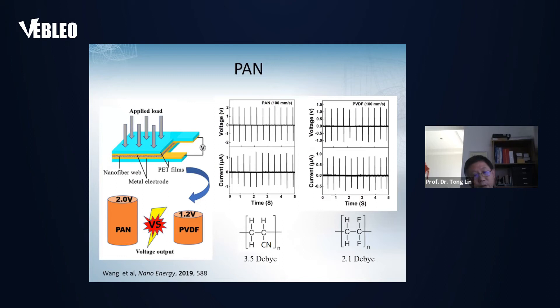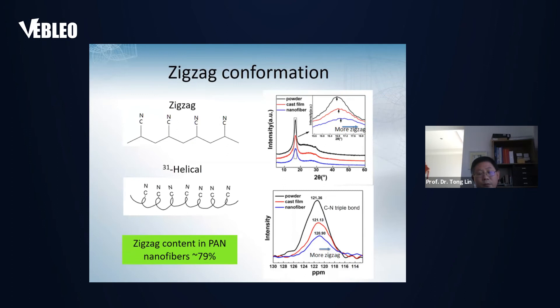We also found electrospinning is a very good technology to release the piezo-electrical potential of other polymers. Taking polyacrylonitrile as an example. This polymer has a large dipole moment, 3.5, which is much larger than PVDF. It was predicted to have a larger piezo-electrical property than PVDF. But unfortunately, the conventional technology did not support this. This was why PVDF always shows the best piezo-electrical property among the piezo-electrical polymers. However, when we use electrospinning, we found PAN nanofiber indeed has better piezo-electrical output than PVDF.